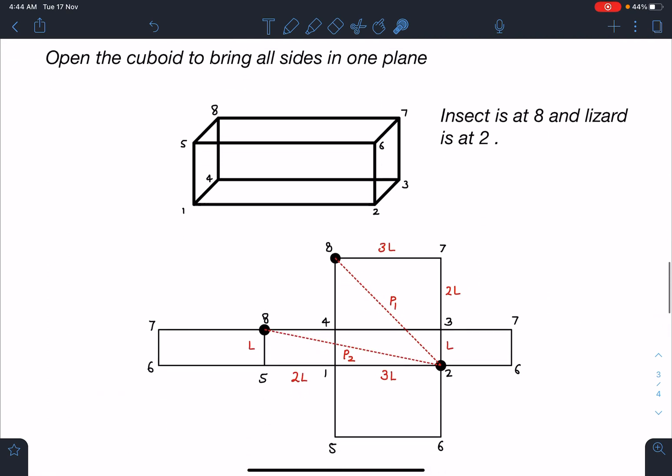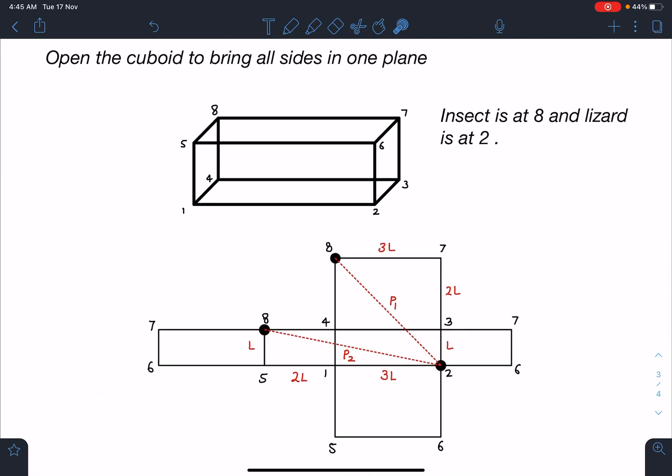When we open this cuboid, it will look something like this. I'm taking this as base 1, 2, 3, 4. 3L is this distance and L is this distance. When I place 2, 3, 7, 6 and open it like this, it is going to open in this manner and this length is going to be 2L. This height is 2L, this side is 3L and this side is L. Then I'll be opening these two sides 2, 6, 5, 1 towards this side.